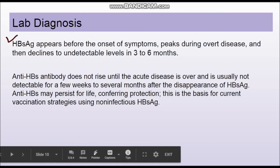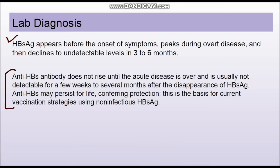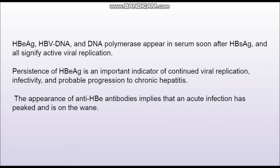The antibody to HBsAg — anti-HBs antibody — does not rise until the acute disease is over. When this antibody is present, it means the disease has been completely resolved. Anti-HBs antibody rises only after disappearance of HBsAg. In case of vaccination, the only antibody found in the bloodstream is anti-HBs antibody, because a non-infectious form of HBsAg is provided. Other antigens that rise just after HBsAg include HBeAg, HBV DNA, and DNA polymerase.